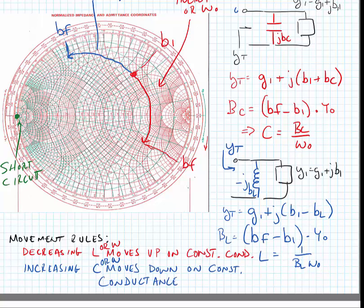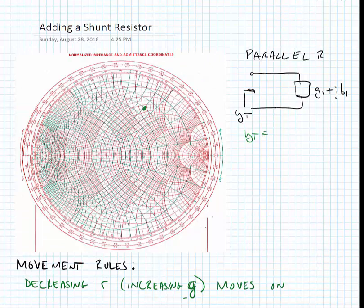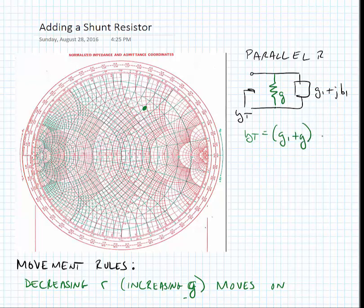Next, let's see what happens when we add a shunt resistor. Here we're going to add a shunt resistor with a conductance value of little g to our network. We can find the total admittance looking into the network as g1 plus little g plus jb1. Note that adding the conductance does not change the imaginary part of the network.